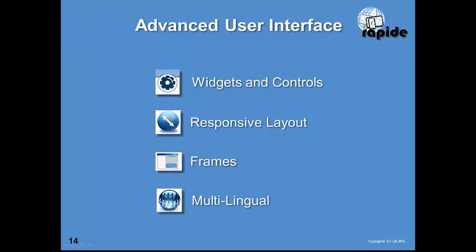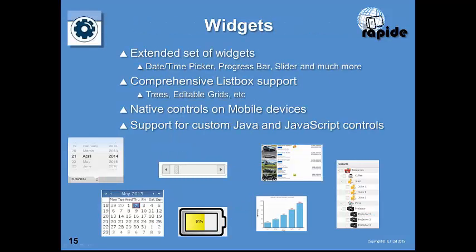Looking at the user interface in more detail: RAPID provides an extended set of widgets beyond the controls familiar in CA Gen, including native controls for date-time pickers, progress bars, sliders, and spinners. There is comprehensive support for list boxes including tree controls and editable grids, with fine user control to resize columns, place bitmaps in a list box, and sort columns. On iOS and Android, controls are implemented using the native controls for that device, so they look and behave exactly as users expect.